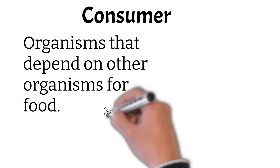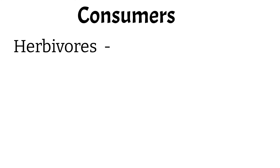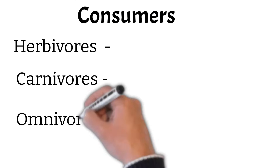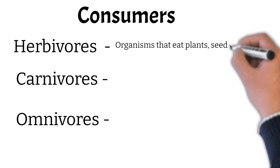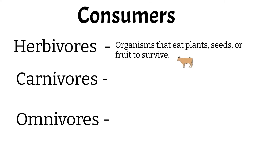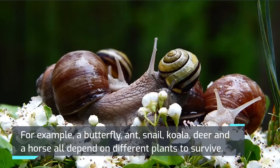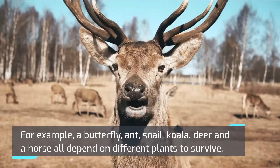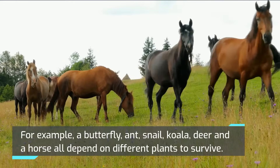Consumers are organisms that depend on other organisms for food. There are three types of consumers: herbivores, carnivores, and omnivores. Herbivores are organisms that eat plants, seeds, or fruit to survive. For example, a butterfly, ant, snail, koala, deer, and a horse all depend on different plants to survive.